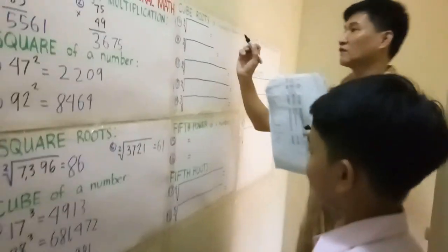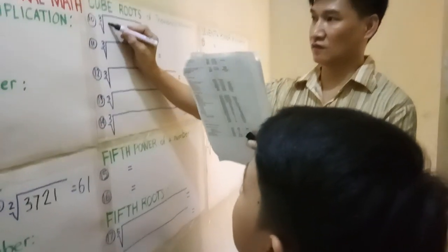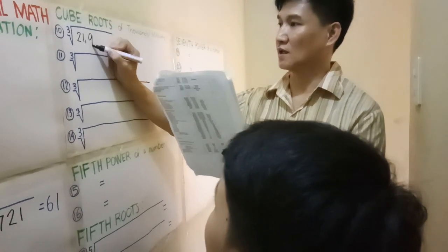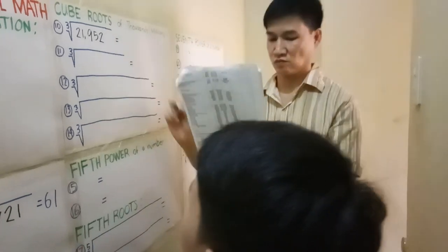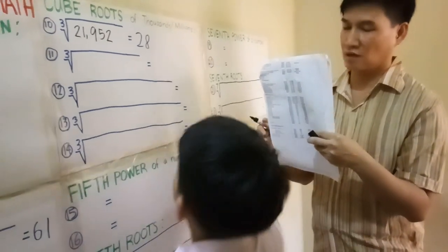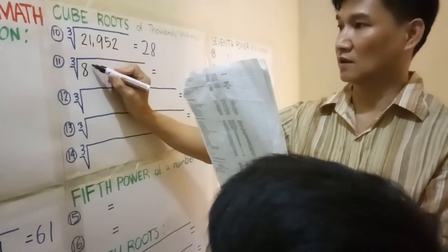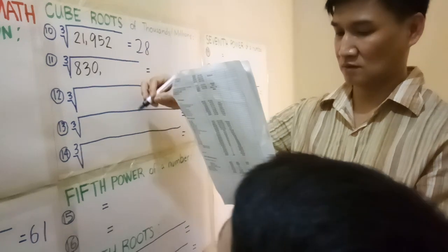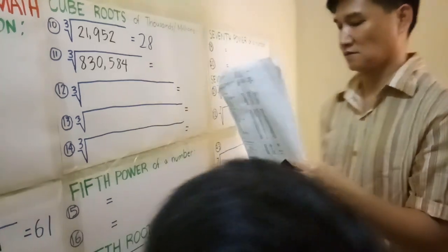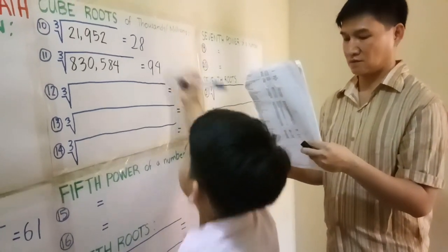Let's proceed to cube roots of thousands and millions. What is the cube root of 830,584? 94. Yes.